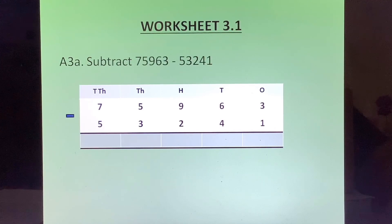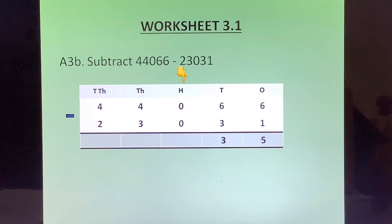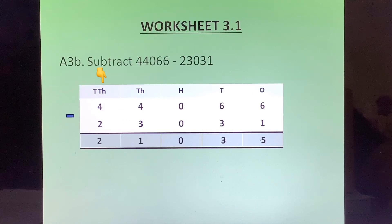Third question, A part: Here when we subtract, 3 minus 1, 2. 6 minus 4, 2. 9 minus 2, 7. 5 minus 3, 2. 7 minus 5, 2. Our answer is 22722. B part: When we subtract we get 6 minus 1, 5. 6 minus 3, 3. 0 minus 0 is 0. 4 minus 3 is 1, and 4 minus 2 is 2. Our answer is 21035.